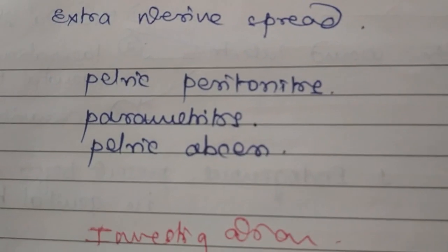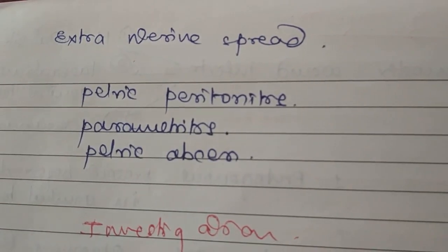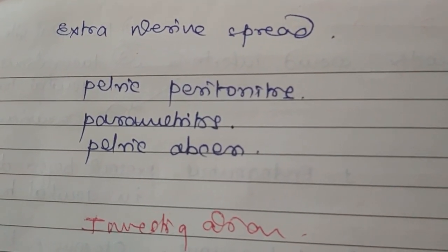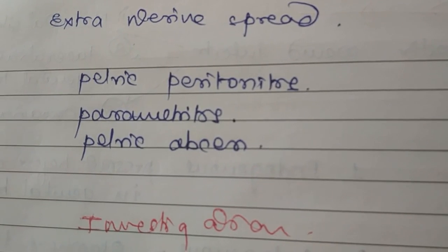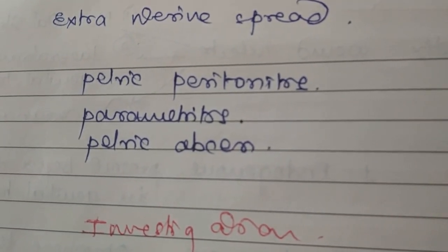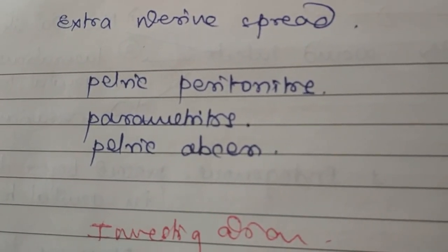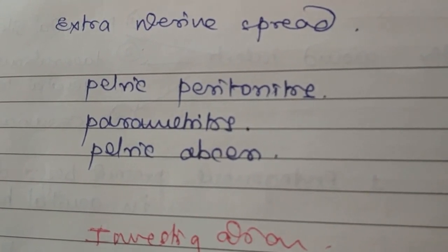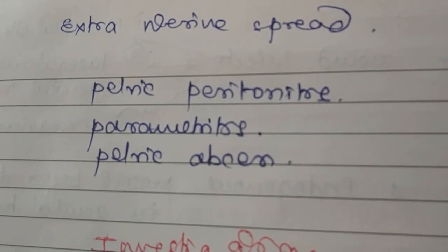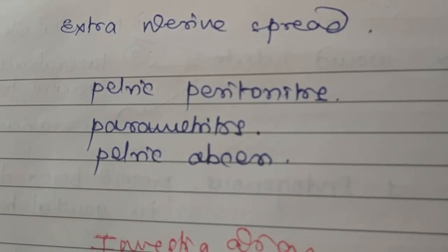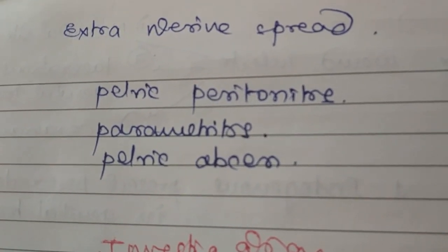To evaluate extra-uterine spread, examine the patient per vaginally and per abdominally. You may feel a boggy, mass-like, flabby structure containing pus-like discharge in both fornices. You can diagnose accordingly and initiate antibiotic or conservative therapy. If that does not resolve the condition, proceed to further surgical intervention.